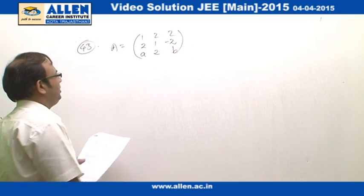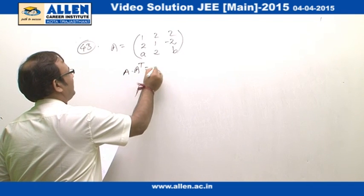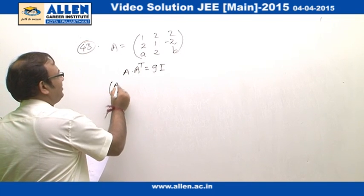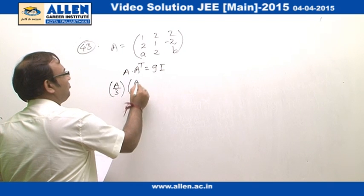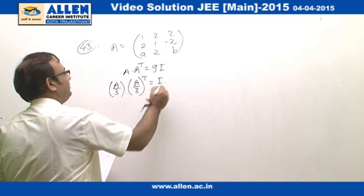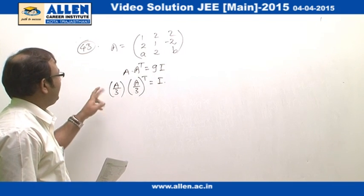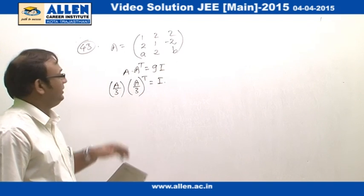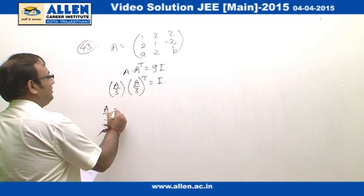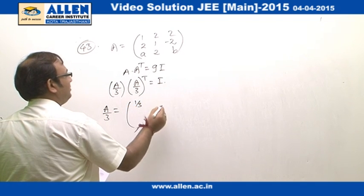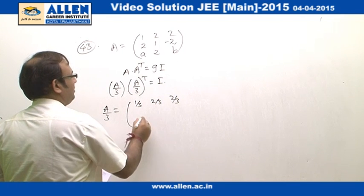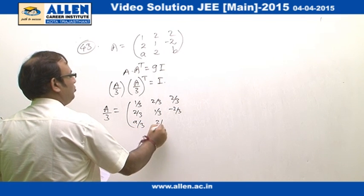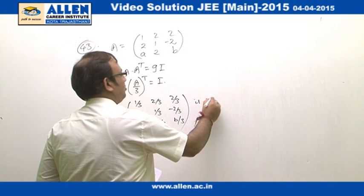And then we are being given the equation A into A transpose equals 9I. What we can do here is we can write this equation as A by 3 into A by 3 transpose equal to I. And from that we can conclude that A by 3 is an orthogonal matrix because the matrix multiplied by its transpose is getting to be identity. So A by 3 is equal to 1 by 3, 2 by 3, 2 by 3, 2 by 3, 1 by 3, minus 2 by 3, A by 3, 2 by 3, B by 3 is orthogonal.